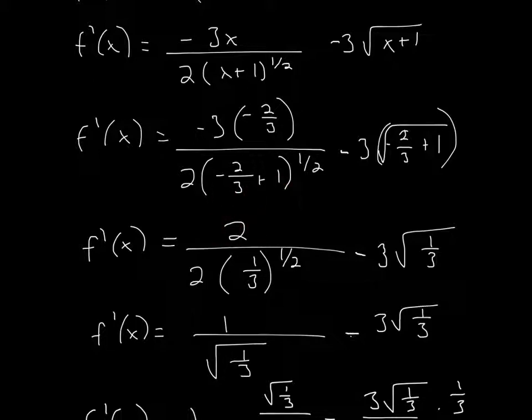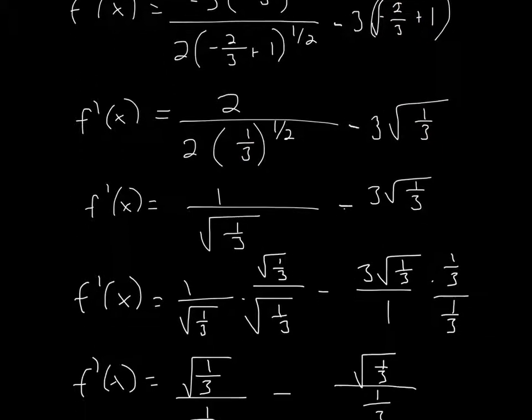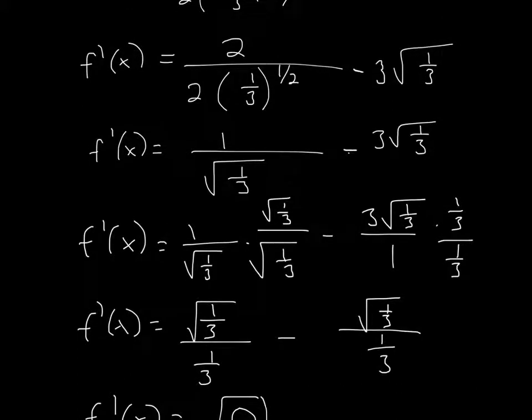Here, negative 2 over 3 plus 1, that becomes 1 over 3. Same thing here, it just becomes 1 over 3. And then simplify a little more, well, 1 over 3, well, from here to here, all I did was cancel the 2s.